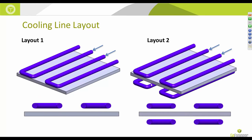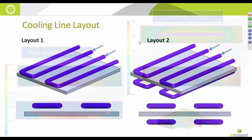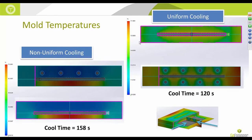Based on that baseline warpage, we evaluated how different cooling line layouts influence the warp profile. We can expect the part to warp towards the hotter side of the mold. Specifying uniform cooling lines throughout the mold helps avoid non-uniform warpage. The coolant used was water at 10°C, injected from the sprue location side since that's the location you'd like to keep coolest.